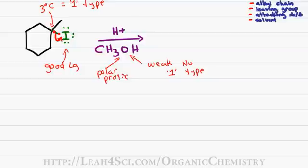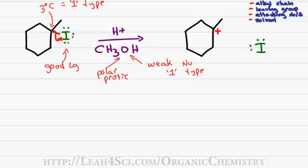Let's begin. We have the carbocation formation step when iodine takes the electrons that bind it to carbon and breaks away in solution. This gives a positive charge on the tertiary carbon and a negative charge on the iodide in solution. We start with a neutral molecule; in the intermediate step we have a positive and a negative that cancel out, so our charges are all accounted for. We won't focus on the iodine anymore, keeping in mind that it will be dissolved in methanol somewhere in solution.